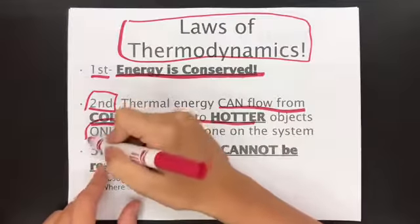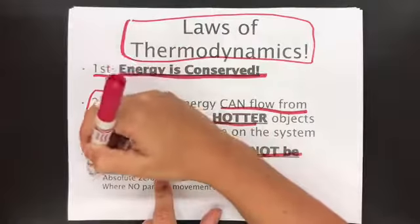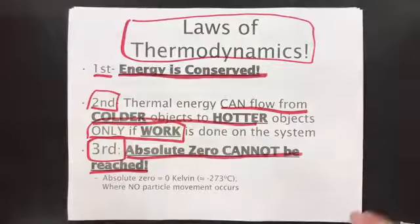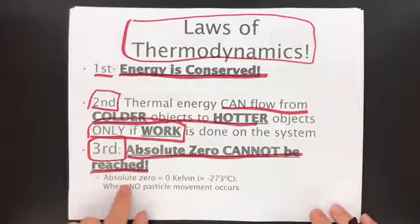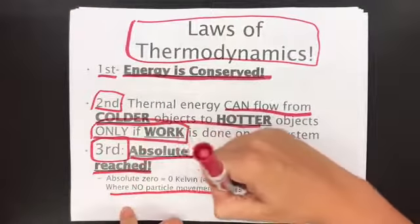Like a refrigerator, that's how it works. Third law, absolute zero cannot be reached. Now what they're saying, there's a theory out there that absolute zero means that there's no particle movement.